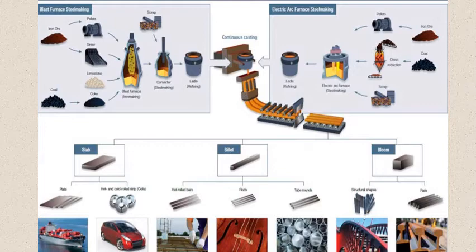Steel is used for ships, cars, musical instruments like violins, railings, and many medical uses. These are all the kinds of usages for steel. Here's a video on how steel is made.